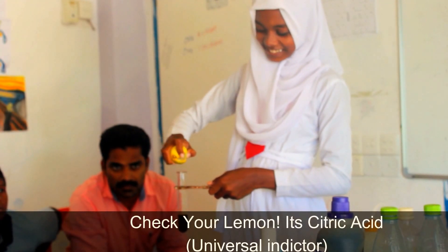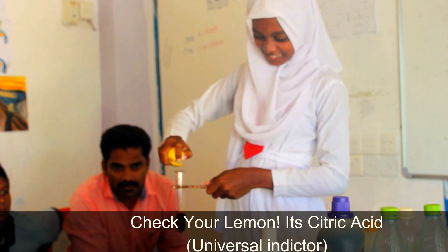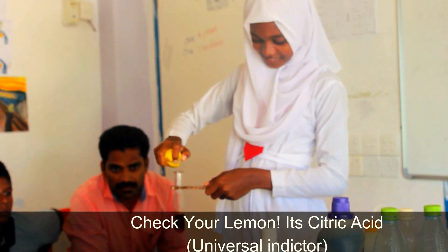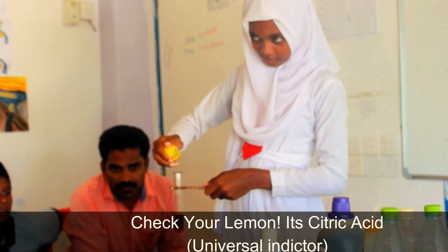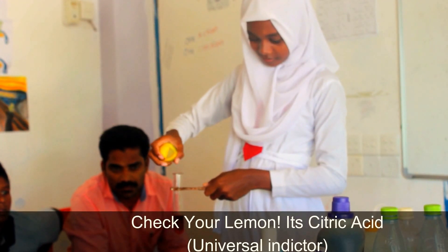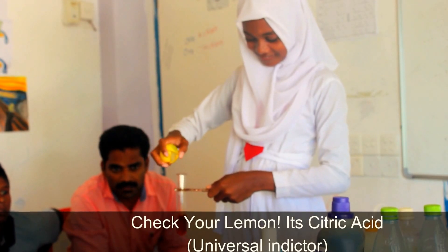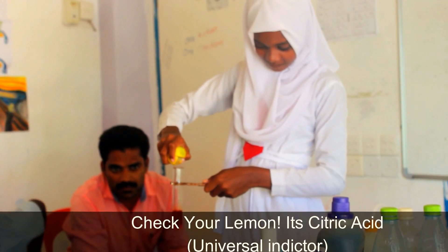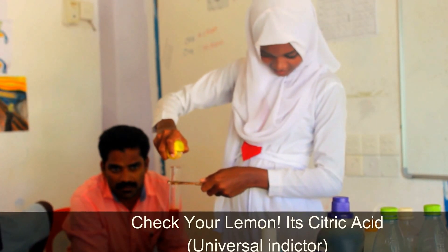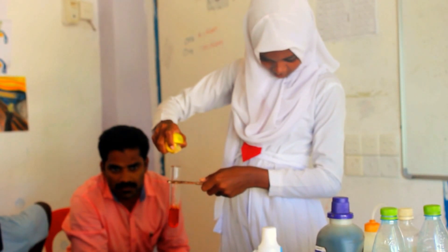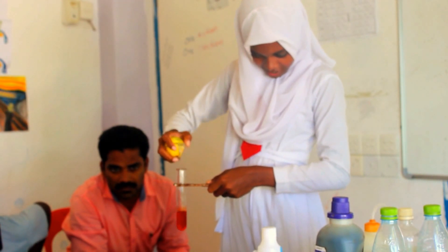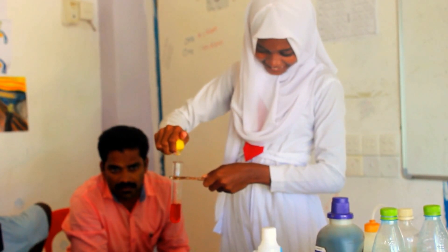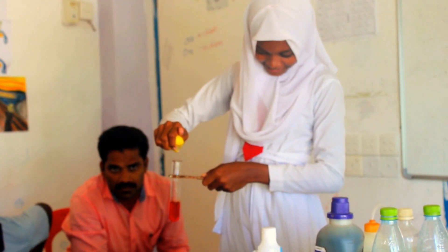Shaja is checking her lemon to know whether it is acid or base. She is using a Universal Indicator to check that. Her Universal Indicator turns into red color, showing that it is Citric Acid.